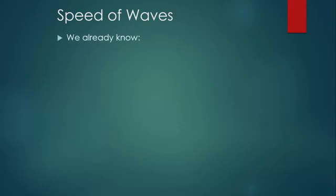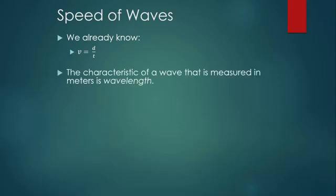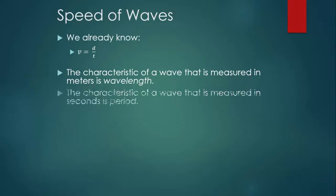Watch. So let's start with something we already know. V equals d over t. Speed equals distance over time. Now let's think about the new stuff that we learned. The characteristic of a wave that's measured in meters, like distance, is wavelength. And the characteristic of a wave that's measured in seconds, like time, is period. So let's rewrite that equation that we've known since September as V equals lambda over T. That is, the speed of a wave equals the wavelength of the wave divided by the period of the wave.